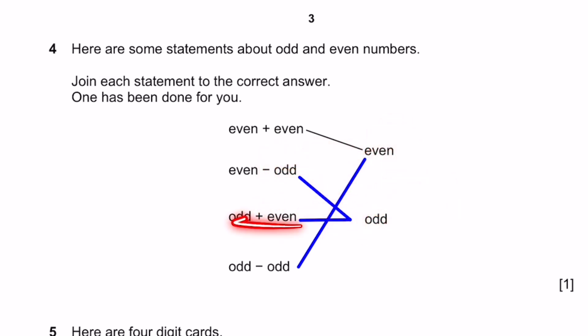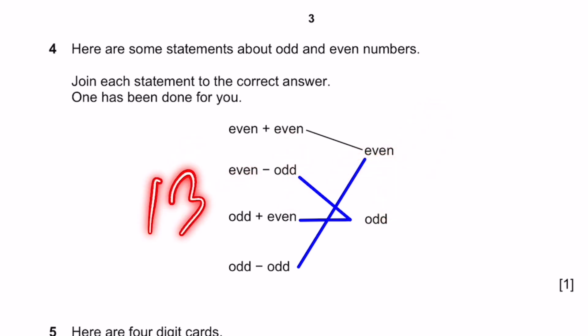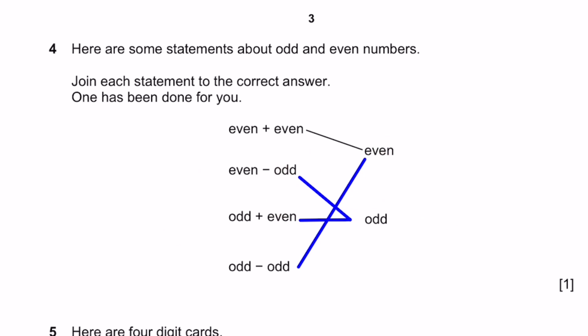Now odd plus even. That'll be 3 plus 4, which equals 7. Odd. 5 plus 8, which equals 13. Odd. So this is odd. Odd minus odd. We can say 9 minus 3, 6, even. 13 minus 11, 2, even. That's how you get it. That's the answer.